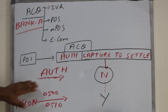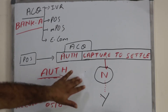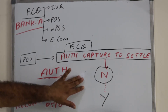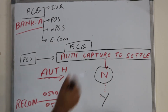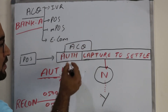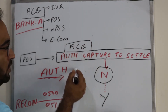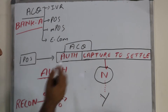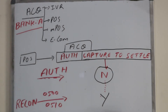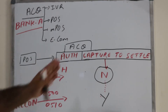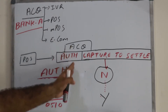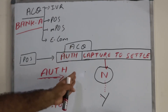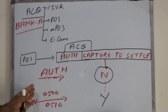When the authorization is received, the acquiring bank will log the authorization data — all the ISO fields, the card number, amount, chip data, and mag stripe data — and save it in the database.